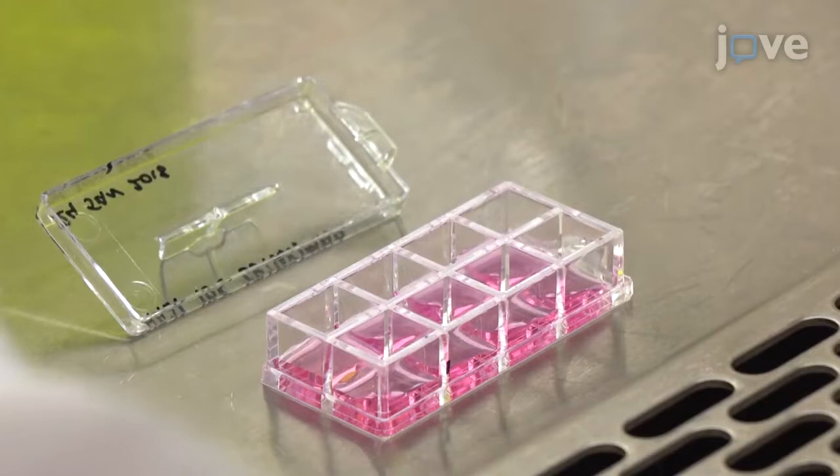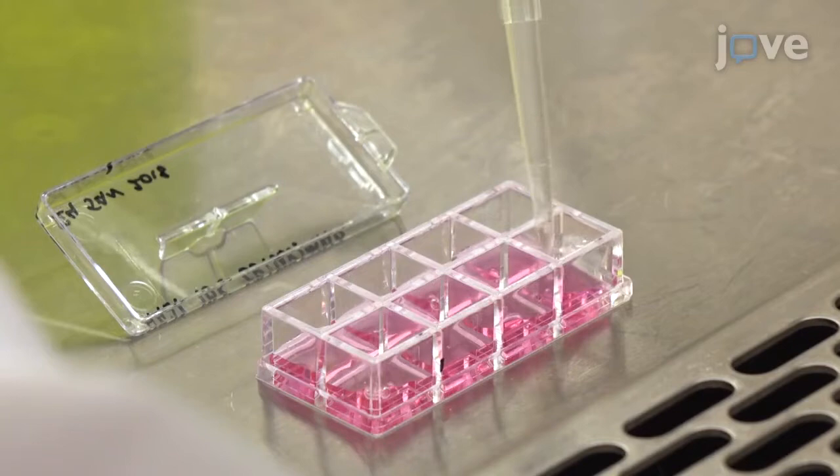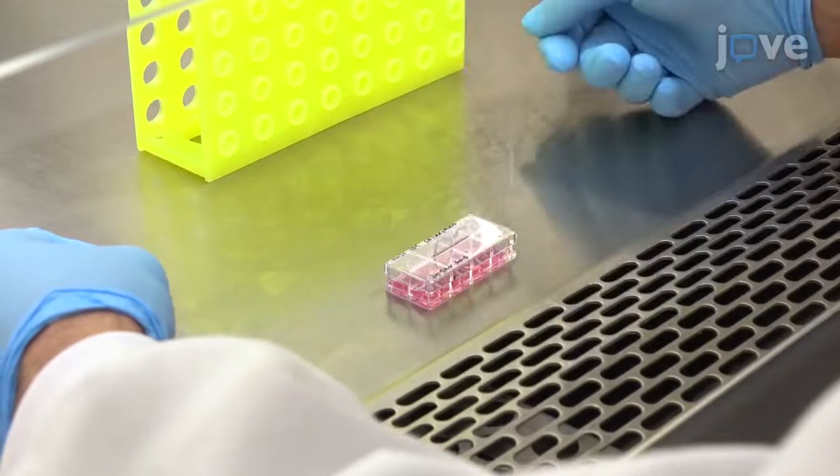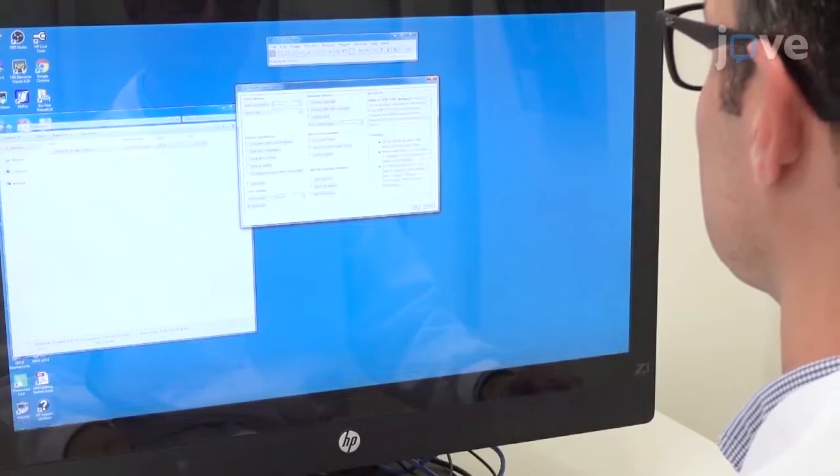The next day, add 100 nanograms per milliliter of EGF ligand in media to the cells in order to stimulate EGF receptor aggregation. Incubate the cells with the ligand at room temperature for 10 minutes before fixing them.